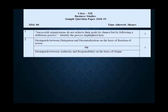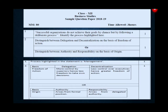Now let us discuss the answers. For the first question — 'Successful organizations do not achieve their goals by chance but by following a deliberate process' — the process here is management. As we explained, management involves functions: planning, organizing, staffing, directing, and controlling. The question is asking about the total complete process, so our answer is management.